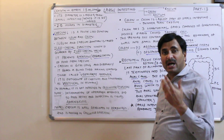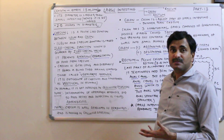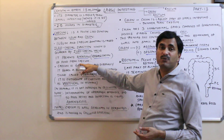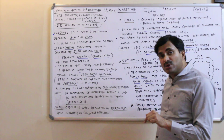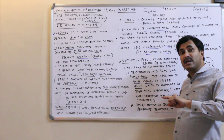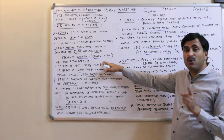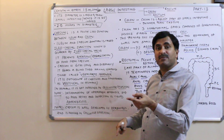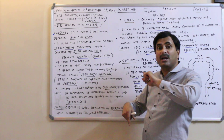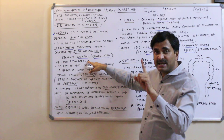We have already studied the cardiac sphincter and pyloric sphincter. All sphincters or valves present in the alimentary canal serve to prevent backflow of food. The ileocecal valve allows food to pass from the ileum to the cecum, but does not allow regurgitation — that is, it does not allow backflow of food from the cecum back to the ileum.